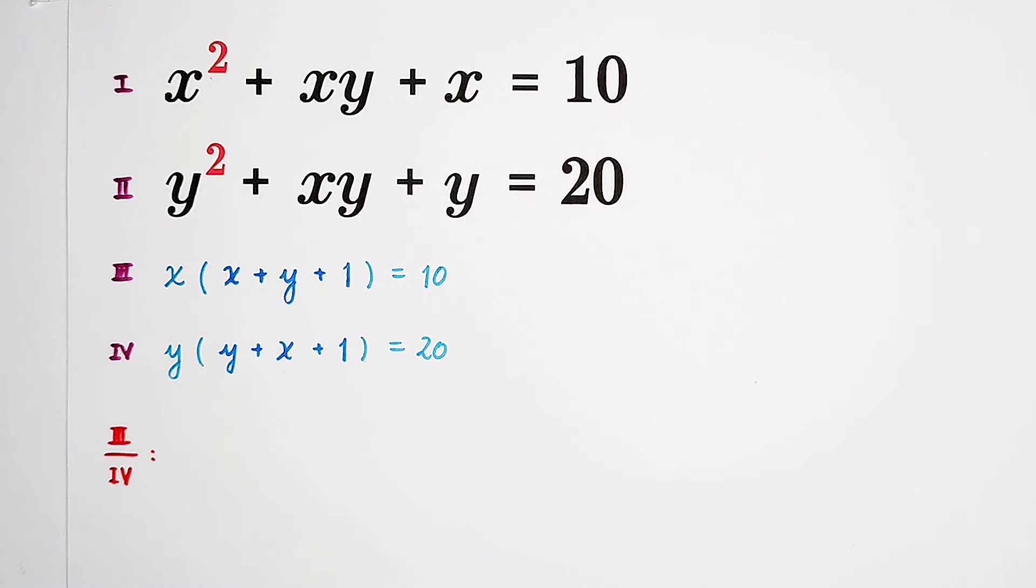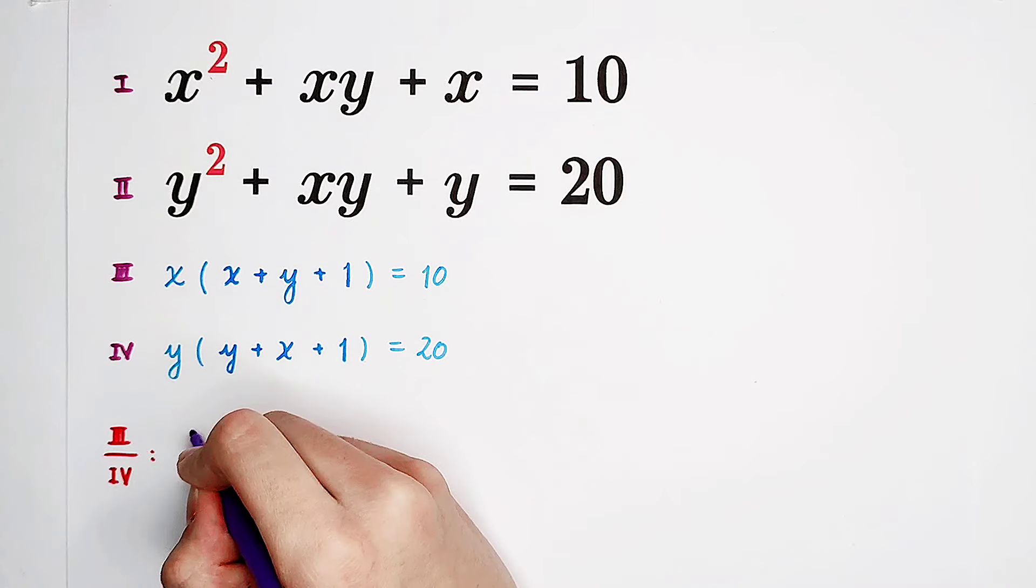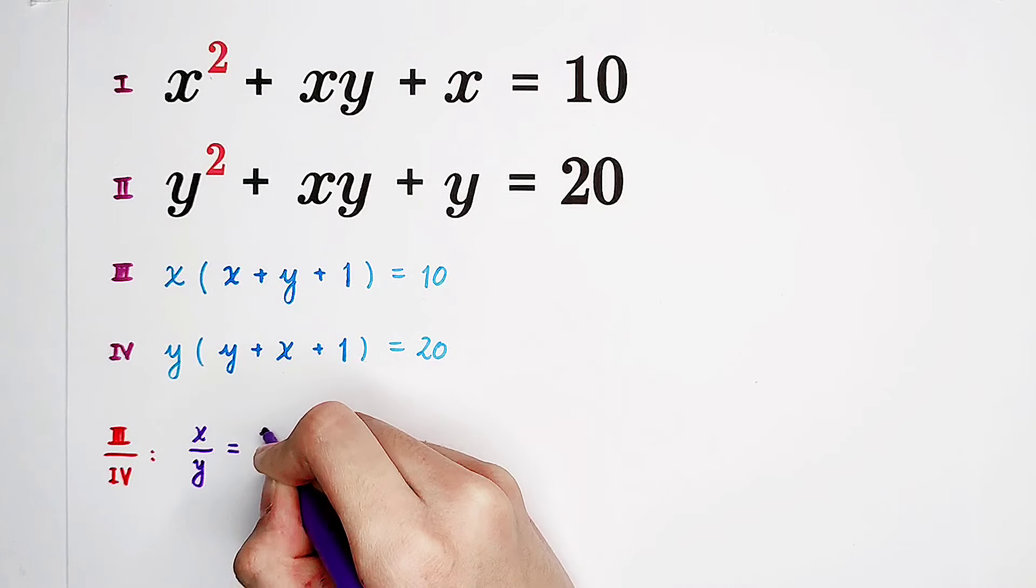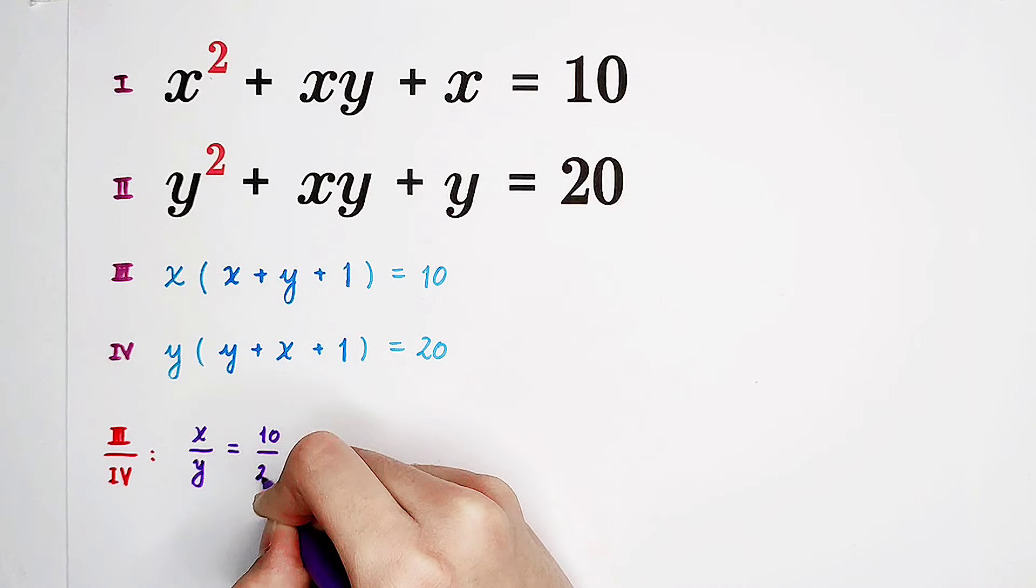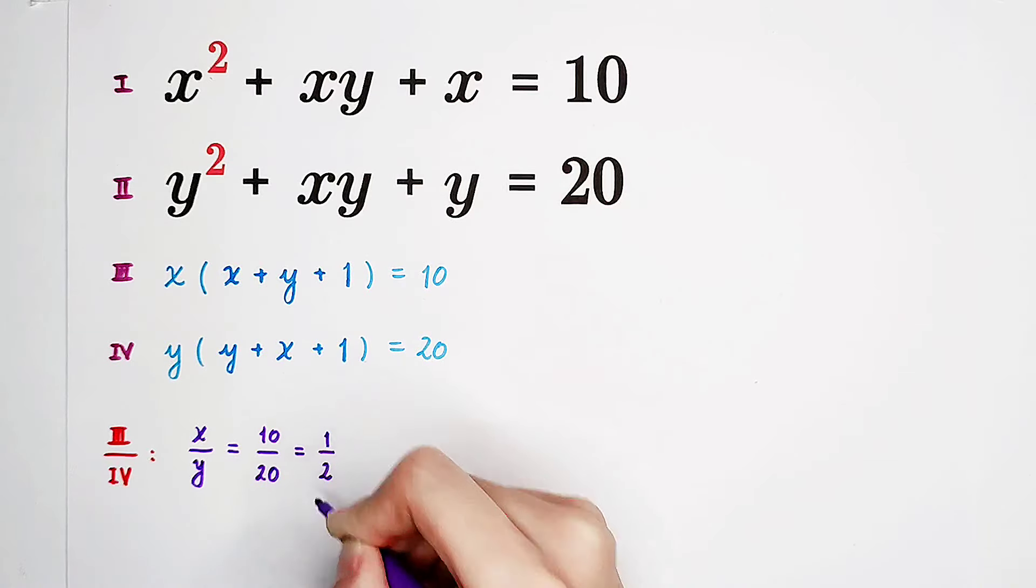Now we can get the left side divided by the left side, the right side divided by the right side. These two parts are identical, so they cancel out. x over y equals 10 over 20. We know 10 over 20 is just 1 over 2, or one half.